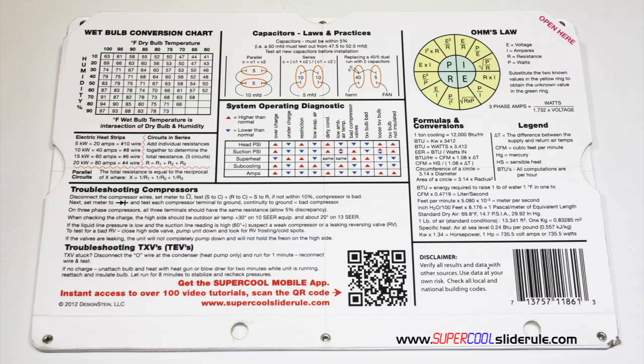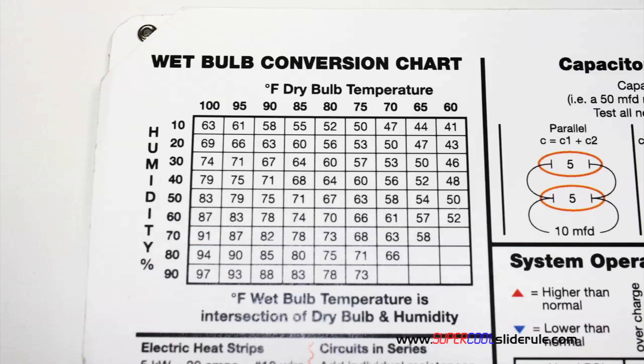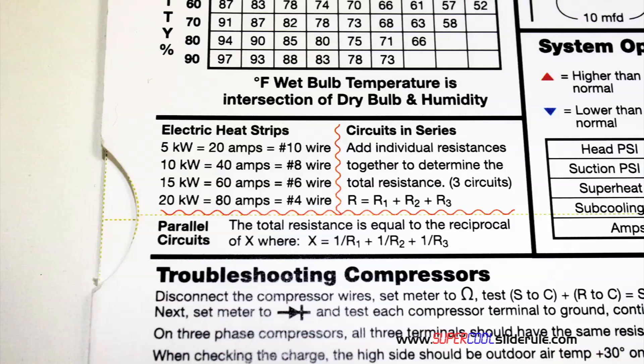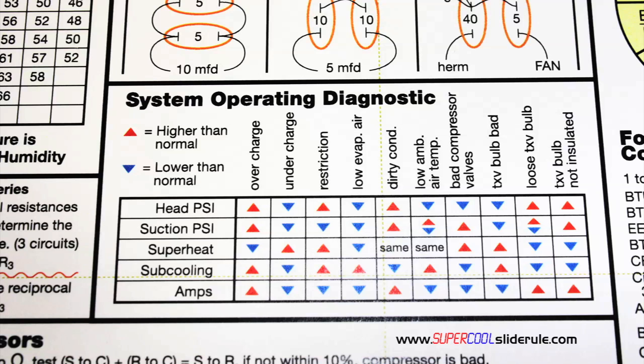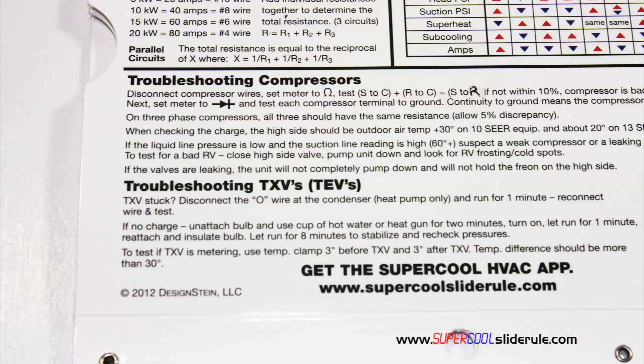It has capacitor rules and practices, a wet bulb conversion chart, how to perform computations on series or parallel circuits, an electric heat strip guide, a complete system troubleshooting diagnostic chart, and how to troubleshoot compressors and TXV.